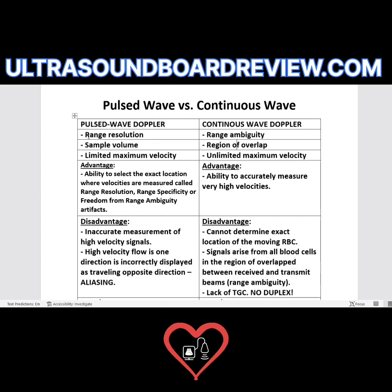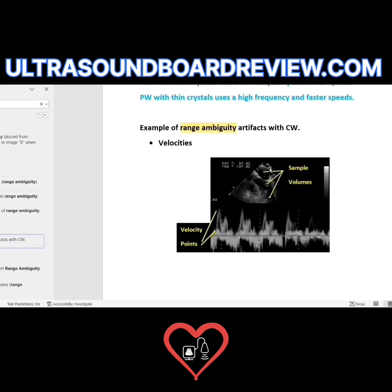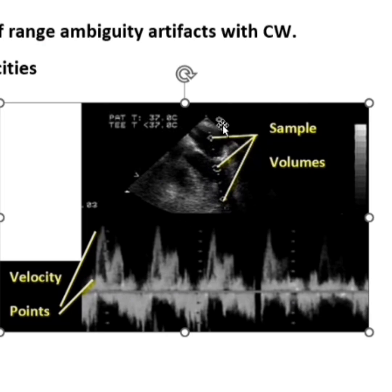Then you could also note that pulse wave Doppler has range specificity and freedom from range ambiguity artifacts. This is a good example of range ambiguity artifacts — a transesophageal echo checking inflow through the mitral valve with continuous wave Doppler.